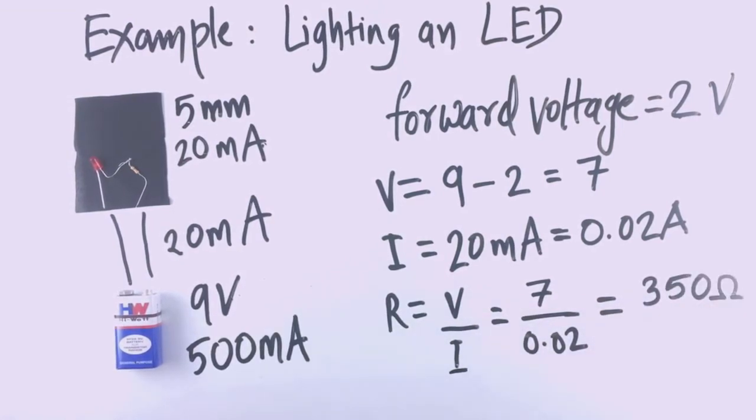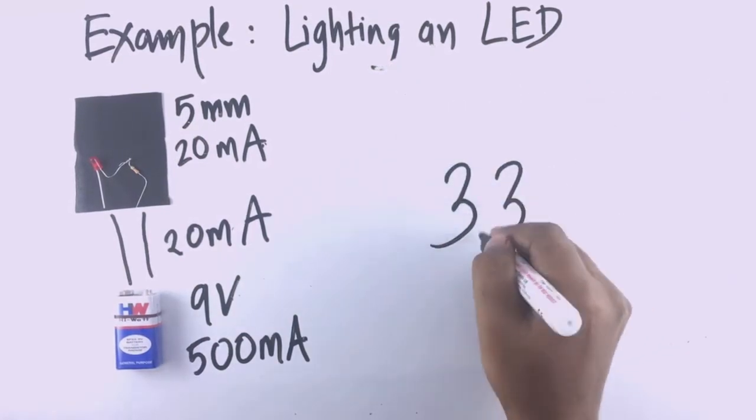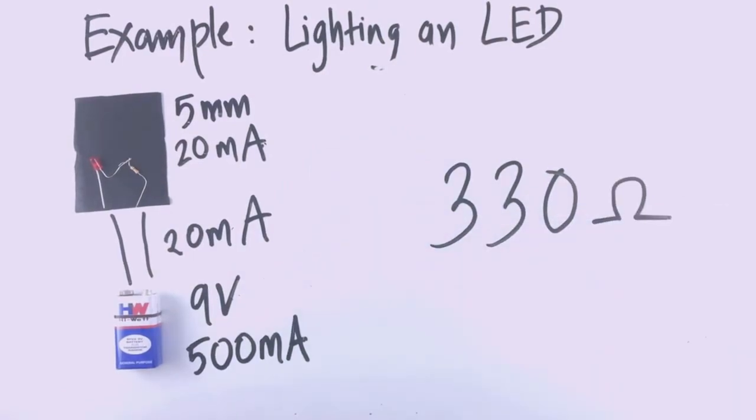You can now buy a resistor with resistance closest to your calculations. Here it is 330 ohms. So how will you identify the 330 ohms resistor from these?